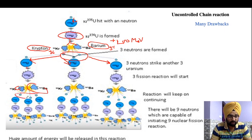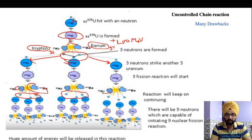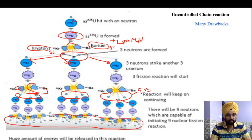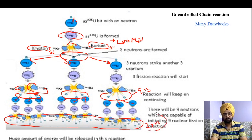In the first step, three neutrons are emitted. In the second step, nine neutrons are emitted. Then 27 neutrons are formed, then 81, and then 243 neutrons in the next step — showing the exponential growth of neutrons in the chain reaction.